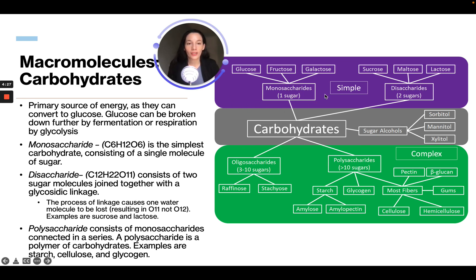We have those monosaccharides and disaccharides, which are considered simple. We have our sugar alcohols. Then we have our oligosaccharides, which are 3 to 10 sugar chains, and our polysaccharides, which can be greater than 10. These are considered complex.